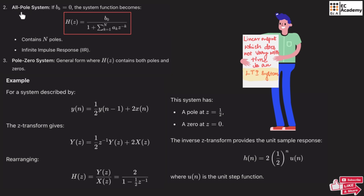The second type is the all-pole system, where b_k = 0, meaning the system has only poles and zeros are equal to zero. Setting b_k = 0 gives H(z) = b_0 / [1 + summation from k=1 to N of a_k·z^(−k)]. Since k varies from 1 to N, the system has N poles. This system function corresponds to infinite impulse response, which is IIR. The third type is the pole-zero system, where H(z) consists of both poles and zeros, represented by the general equation.